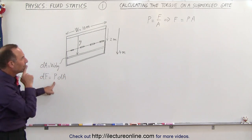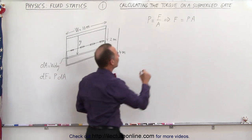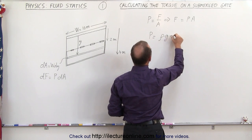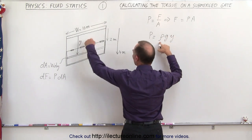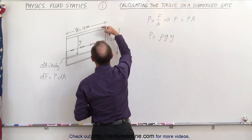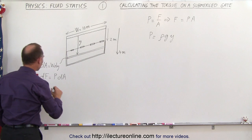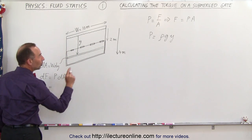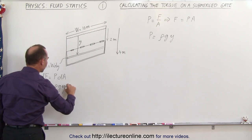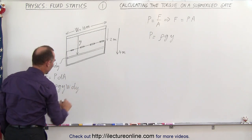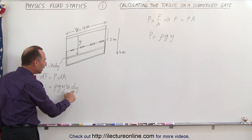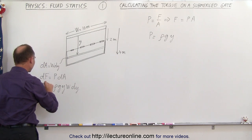But what about the pressure at that depth? The pressure is defined as being equal to ρgY, where ρ is the density of the liquid — let's assume it's water — g is the acceleration due to gravity, and Y is the depth below the surface. So now we can plug that in and say this is equal to ρgY times W times dY. The density, g, and W are all constants; Y and dY are the variables. That gives us dF.